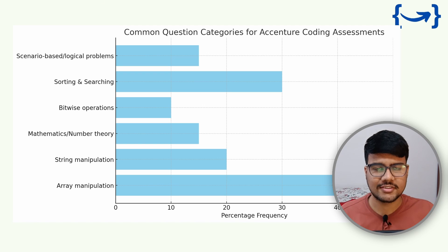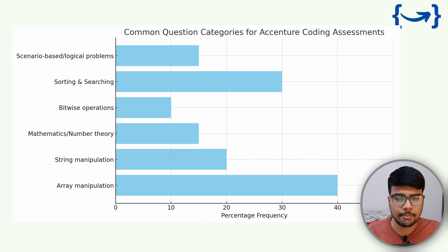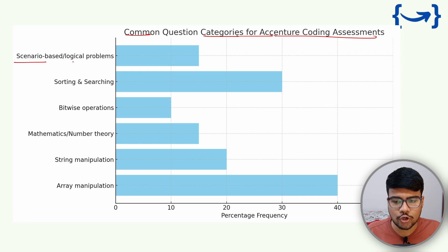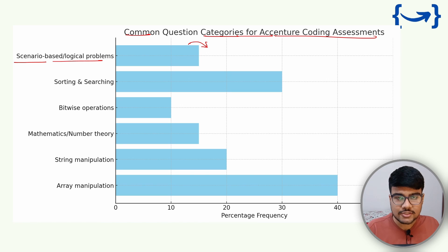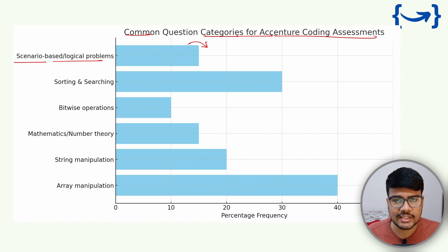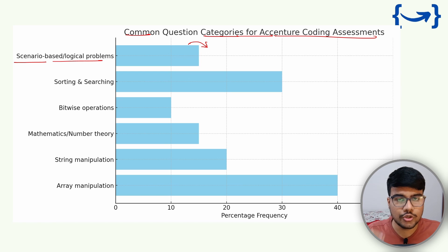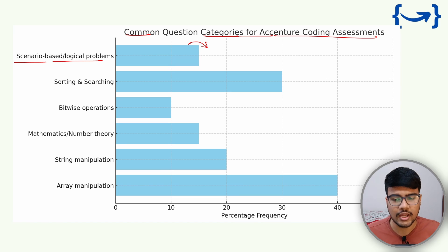Without wasting time, let's come straight to the point: common question categories for essential coding assessment. First, you can see scenario-based and logical problems. These are simple equation-type problems where a story has been created but less work needs to be done. They try to manipulate you, but most of the time the problem statement is straightforward even though the story behind it is a bit long. You need to be very focused on these.